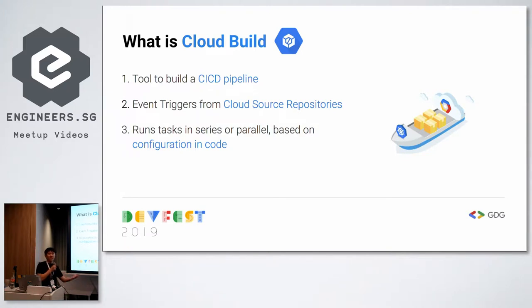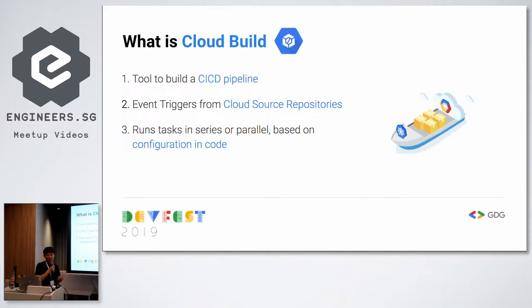If you're already using GitHub or Bitbucket, don't worry — GCP lets you mirror your repository so changes there also trigger automated pipelines via Cloud Build. One important feature: you can run certain tasks in parallel, for example unit tests and integration tests, since they're independent of each other, while running dependent stages in series.